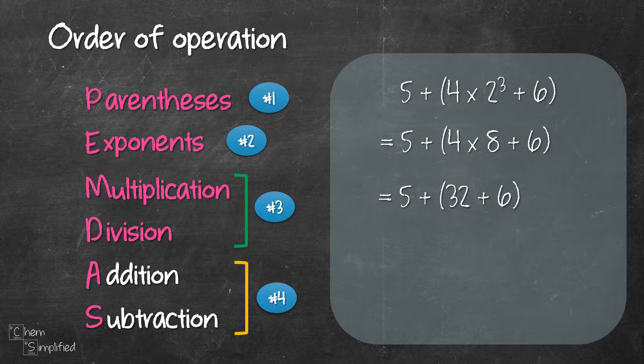So final step, we will add and subtract. Let's add everything up. We have 5 plus 38 and that gives us 43.